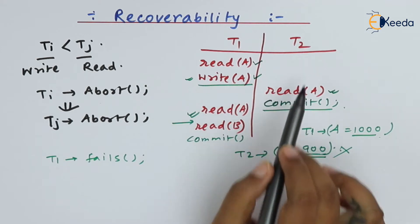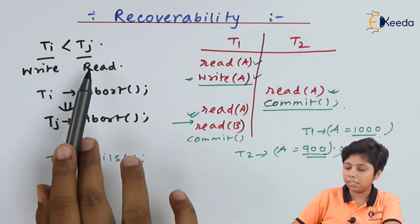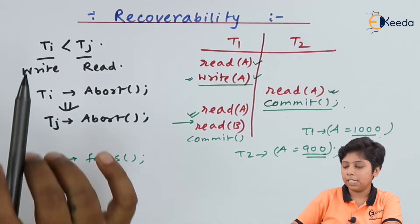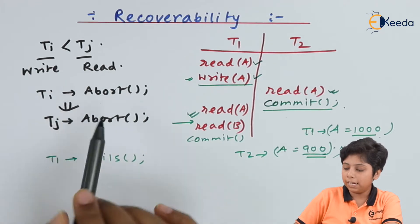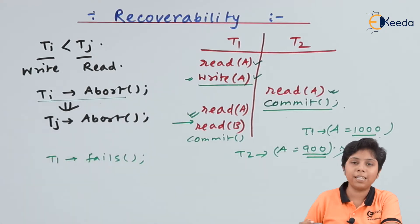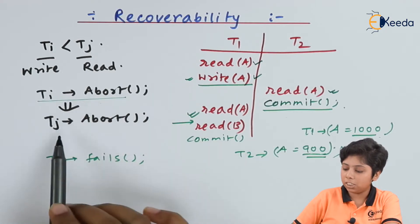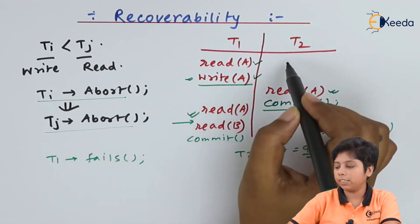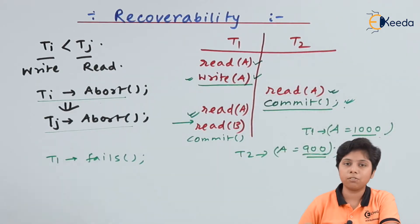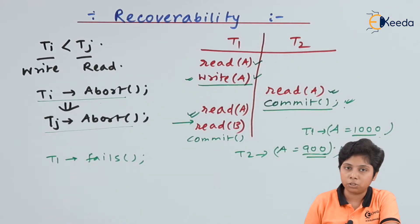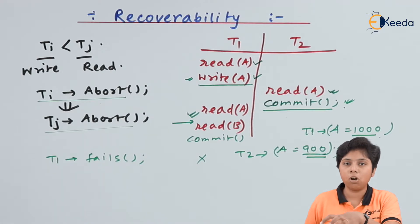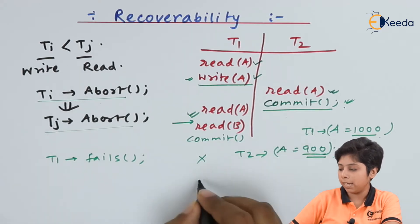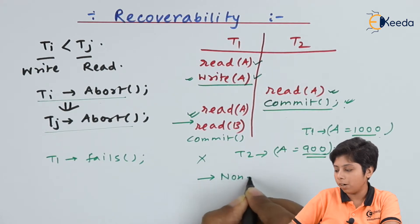By the recoverability rule, if Ti precedes Tj and Ti's write is being read by Tj, then if Ti is aborted, Tj should also abort. But since T2 has already committed, we cannot abort T2. A schedule where a transaction commits immediately after reading an uncommitted write from a preceding transaction is called a non-recoverable schedule.